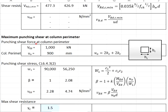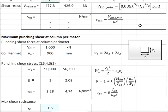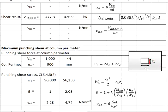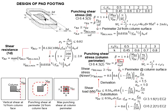First, we need to get the shear loads. The maximum punching shear will have the shear load equal to the total axial load due to the column, which in this case the ultimate axial load is equal to 1000 kN. Then we need to get the perimeter of the punching shear maximum, which is equal to the perimeter of the column. The width of the column is 300 by 150, so the perimeter will be 2 times 300 plus 2 times 150, giving a column perimeter equal to 900 mm.